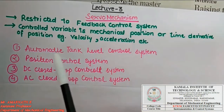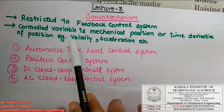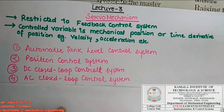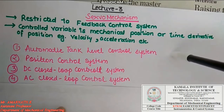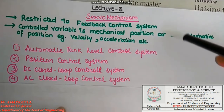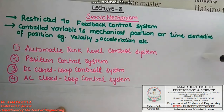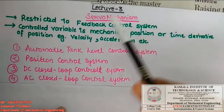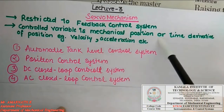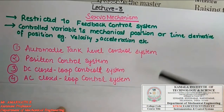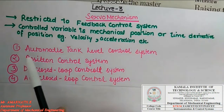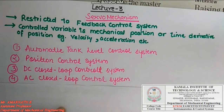Servomechanism is mainly used to control physical or mechanical variables which depend on time, such as speed, position, velocity, and acceleration. It mainly applies to systems providing a feedback element — that is, servomechanism mainly works in closed loop configurations. Now we look at the servomechanism applications.